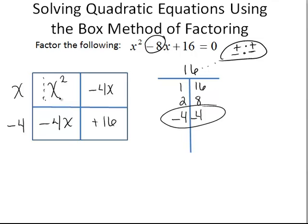Looking at the columns, x squared and minus 4x. Again, the greatest common factor here is x. And minus 4x plus 16, the greatest common factor here being 4. And in this case, a negative 4, since the contents of the box that it's touching are negative inside.